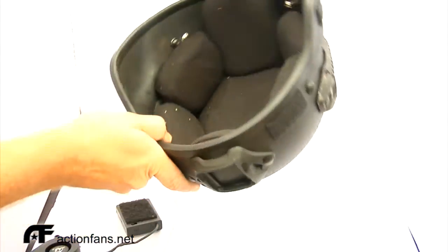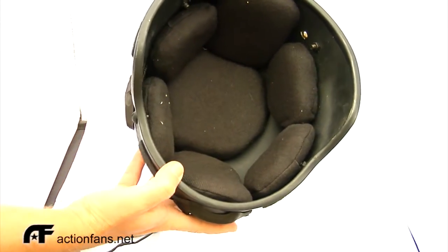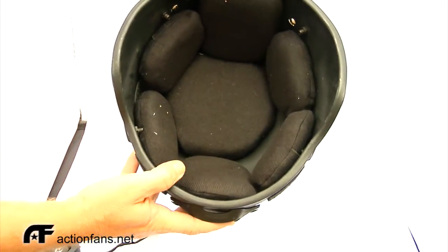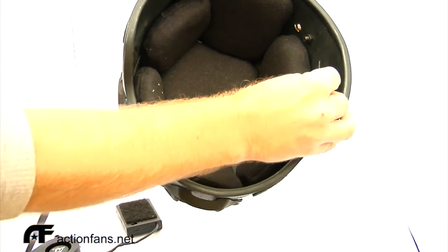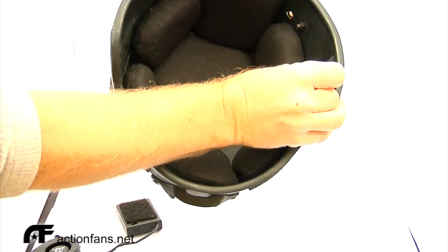Flip the helmet over to where you can see inside it. Using the Velcro that is supplied with your Cyclone Mike kit, set the hook side of the Velcro up where you wish.